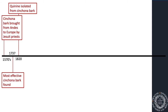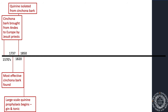In 1820, they isolated the actual chemical in the cinchona bark — a chemical called quinine. A few years later, they started large-scale prophylaxis. A gin and tonic is an alcoholic drink where you mix gin with quinine water, which helps reduce malaria. They started putting quinine in different foods and medicines.